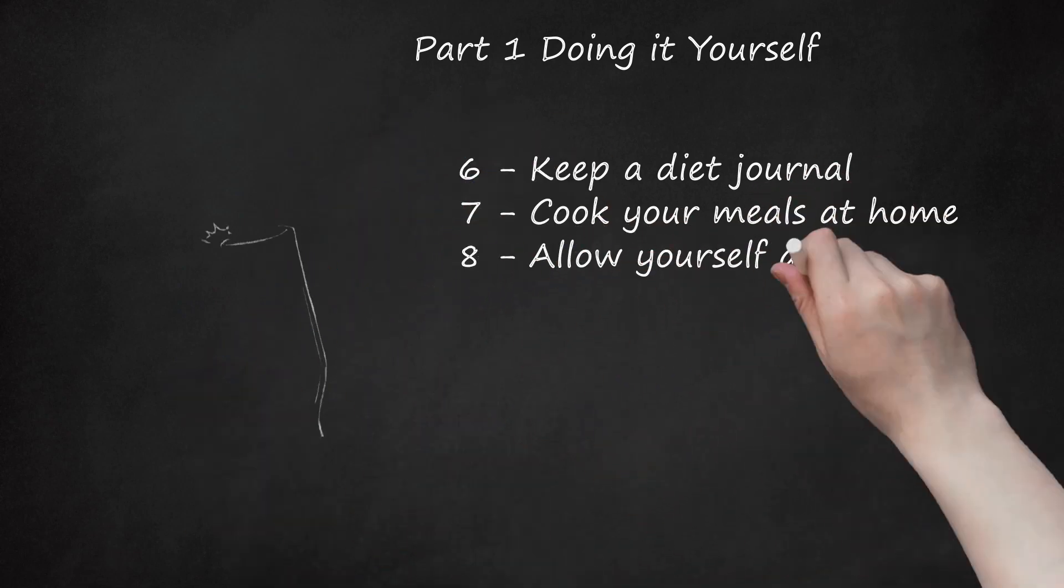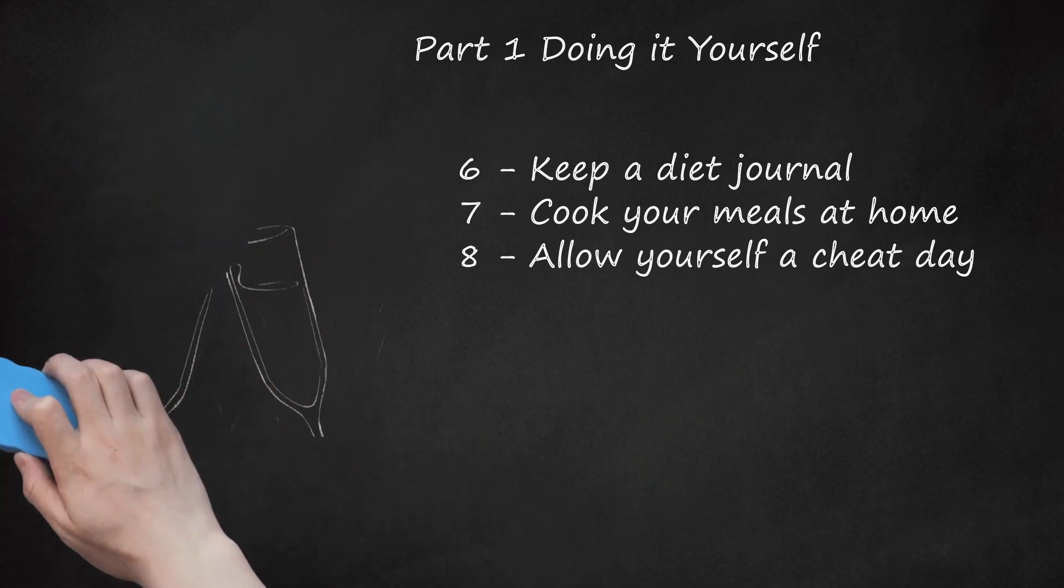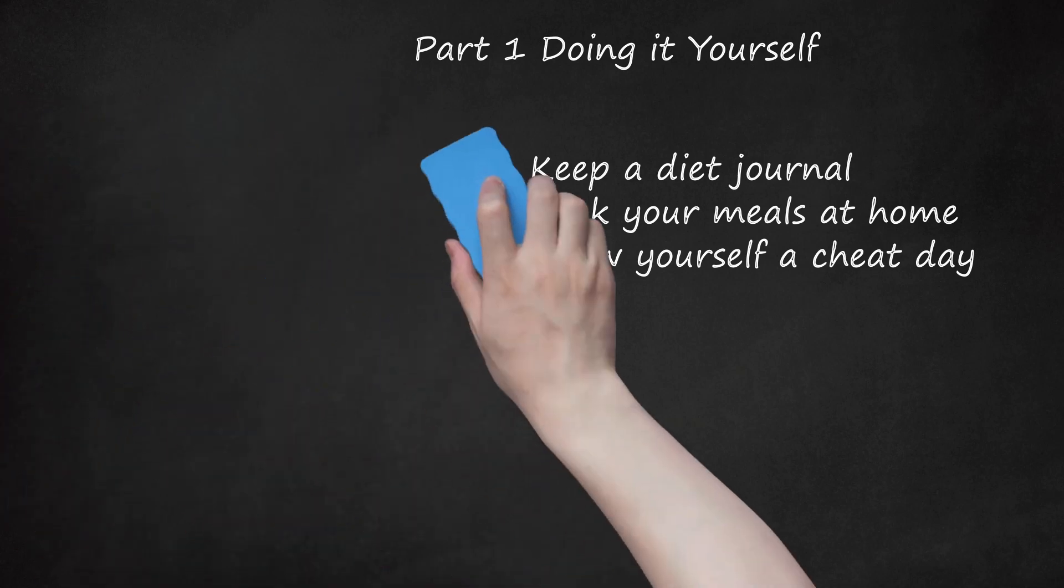8. Allow yourself a cheat day. No matter how committed you are to dieting, it's inevitable to have a slip up every now and then. For many people, social events like birthday parties or picnics make it difficult to eat healthy. Remind yourself that it's okay to indulge every once in a while. Giving up your social life for a diet will make you feel miserable and you'll be tempted to quit before reaching your goals.